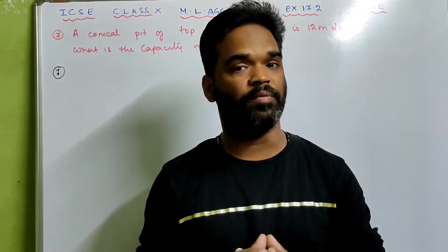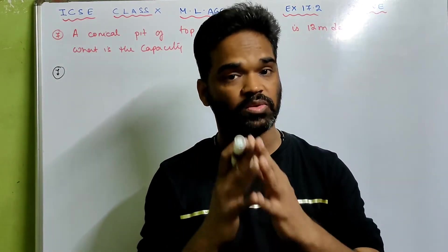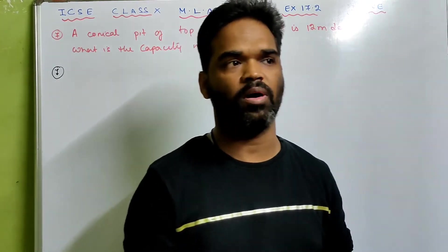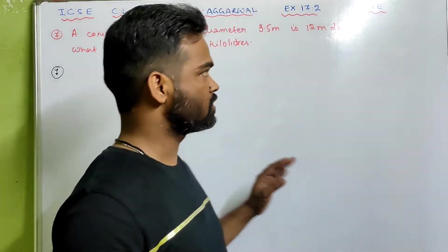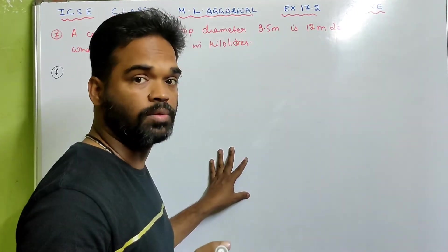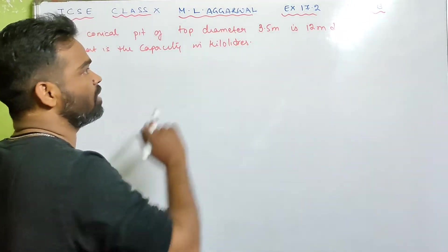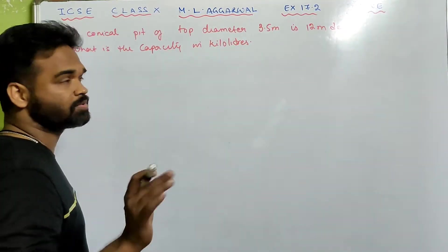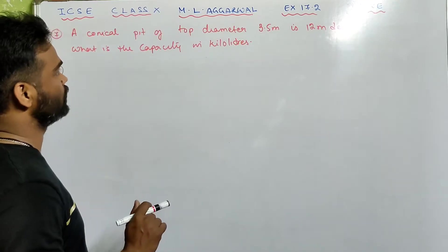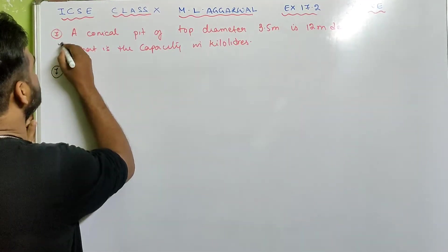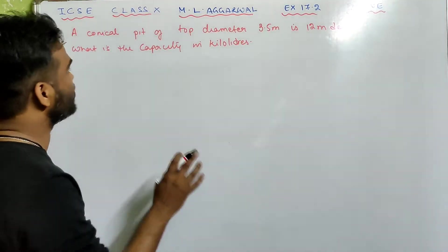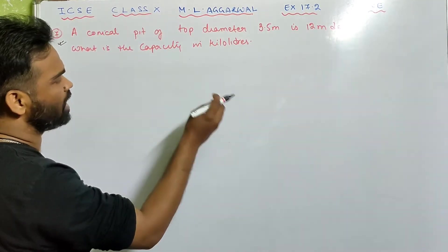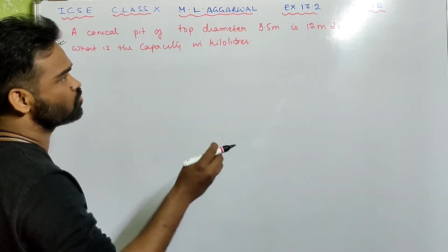Hi kids, I hope everybody is fine. This video is for class 10 students. In class 10 we were solving sums from mensuration — surface area and volume of cone, Exercise 17.2 from M.L. Aggarwal. We have already done till sum number 6; you can see the description box for the previous video. In this video we start from sum number 7.